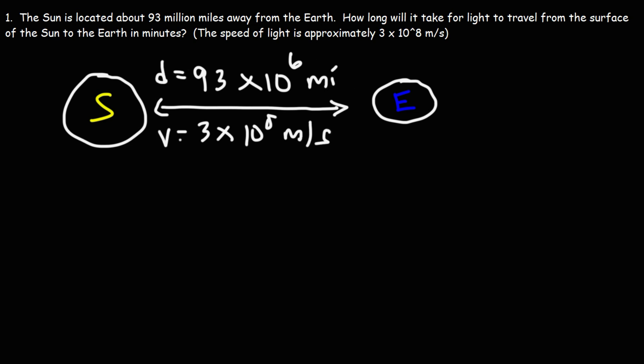We have the distance and we have the speed. We want to find how long it will take for light to travel, so we're looking for the time. This is a constant speed problem. Light travels at a constant speed, there's no acceleration here.